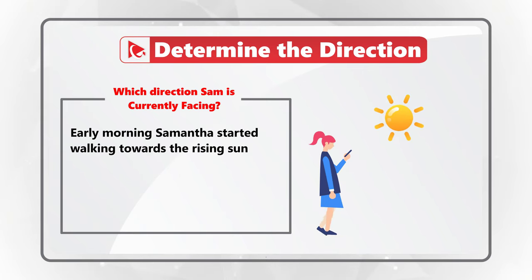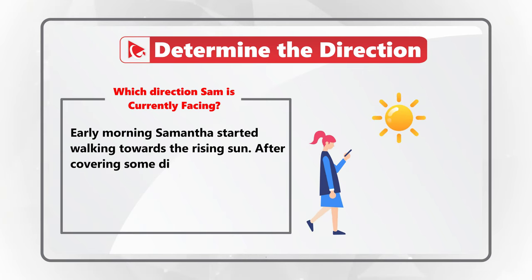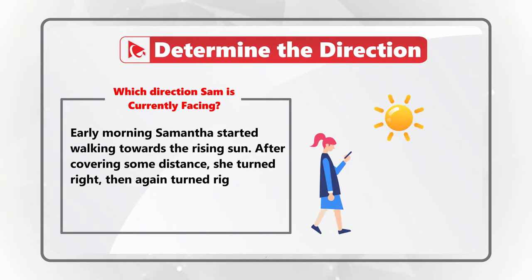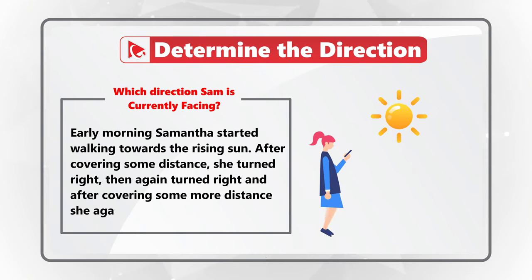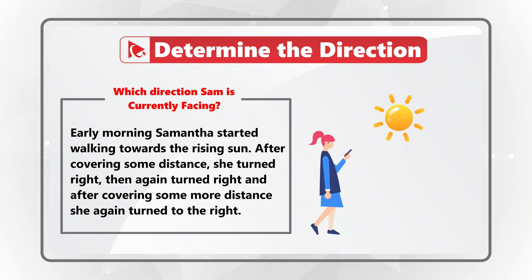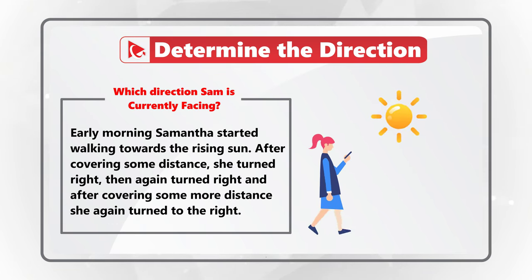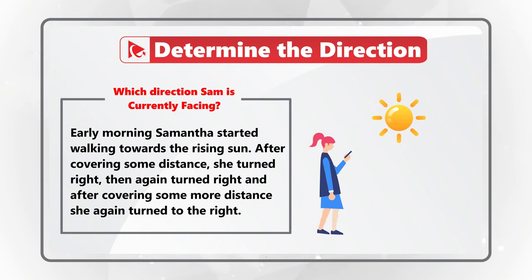After covering some distance, she turned right, then again to the right. And after covering more distance, she again turns to the right. Which direction is Sam facing right now?